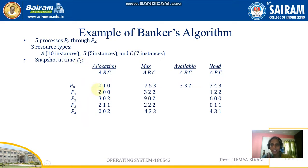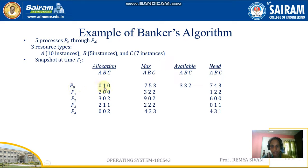The snapshot at time T0 shows the current condition. There are five processes and A, B, C are the three resources. Total A is 10, total B is 5, total C is 7. Out of that, P0 is allocated only 1B, and the maximum P0 requires is 7A, 5B, 3C.